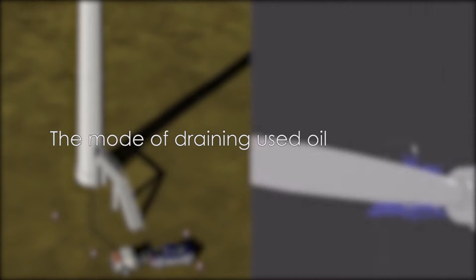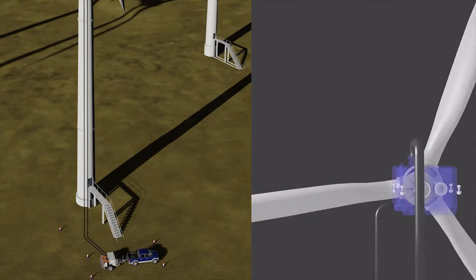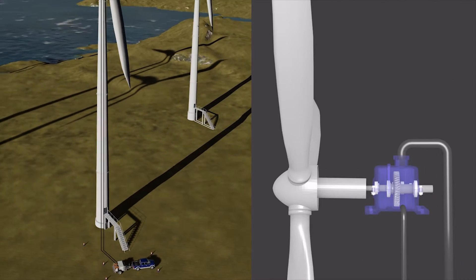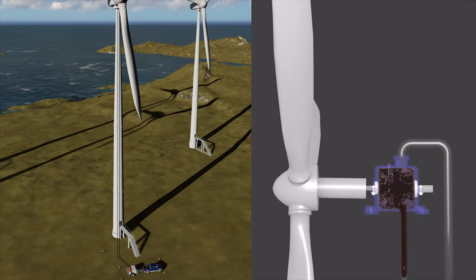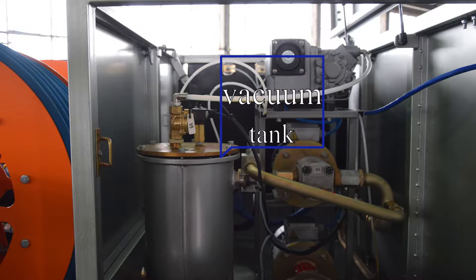The mode of draining used oil: In this mode, the vacuum pump drains the oil from the wind turbine gearbox into a vacuum tank until it's filled, after which the gear pump turns on for further pumping of oil to the prepared container.